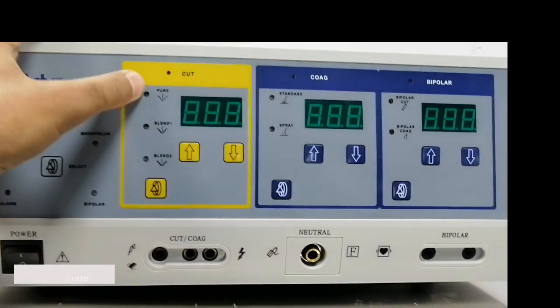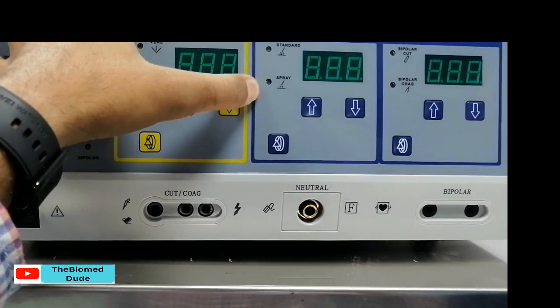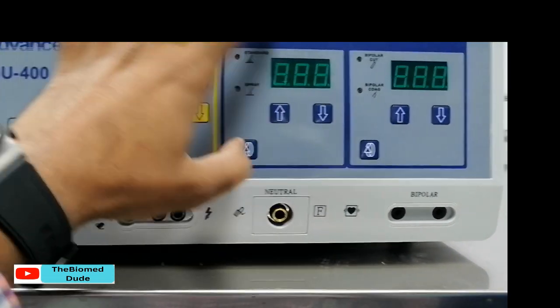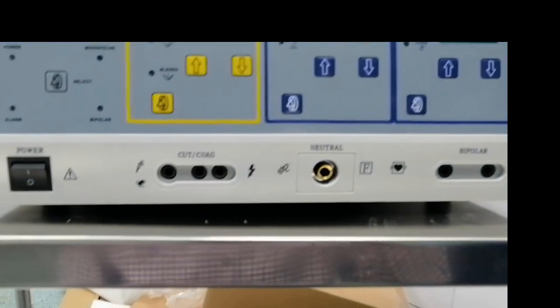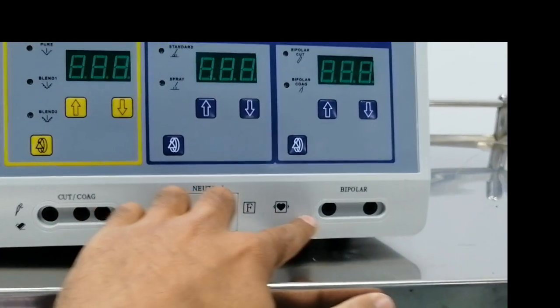Cutting has three modes: pure cut, blend 1, and blend 2. Coagulation has two modes: standard and spray. In bipolar, the two electrodes are placed and the electrical current flows between them, rather than through the tissue.